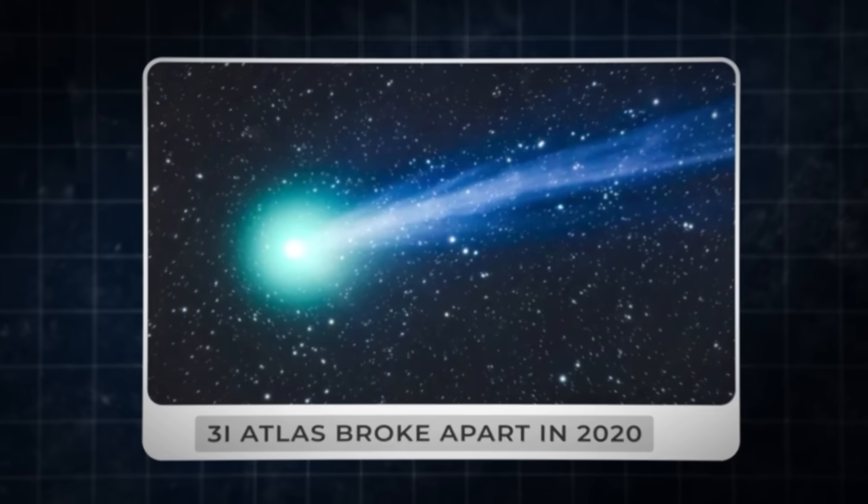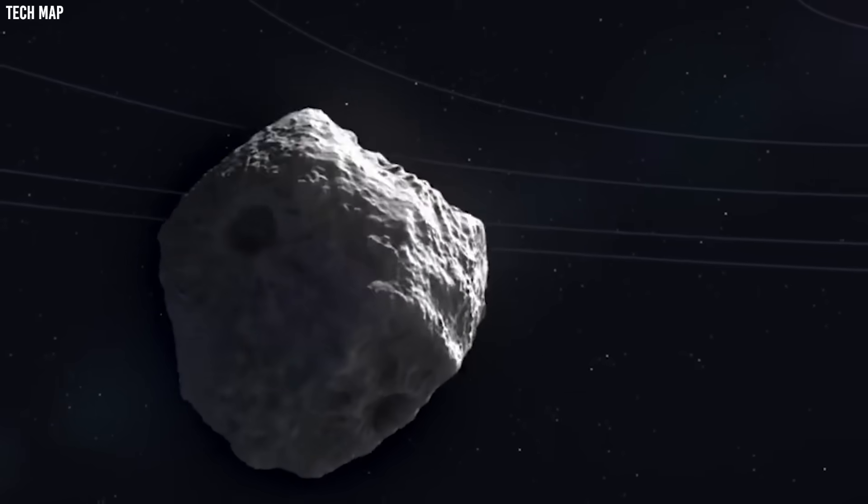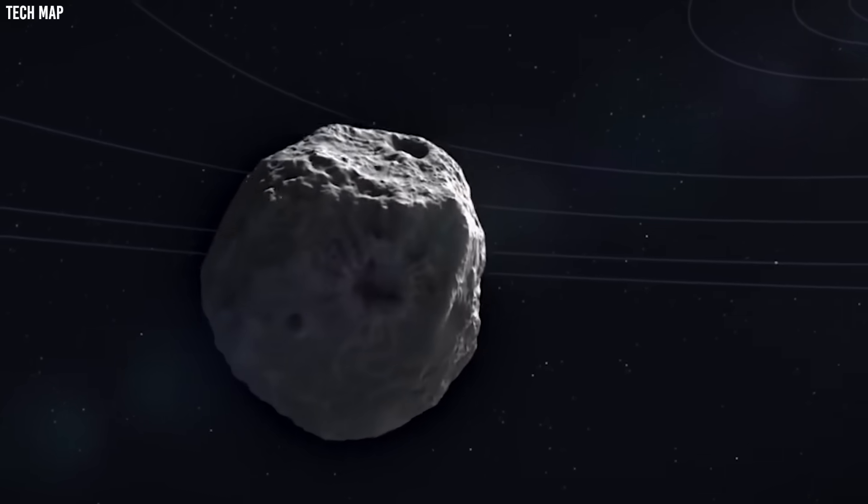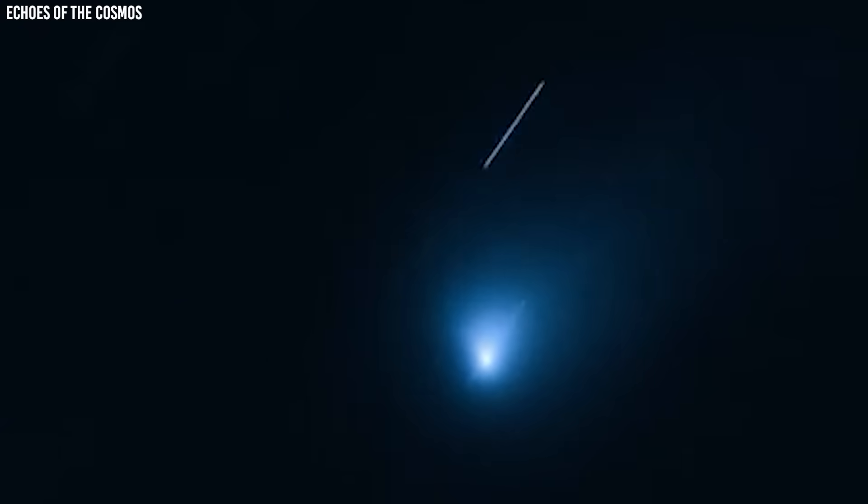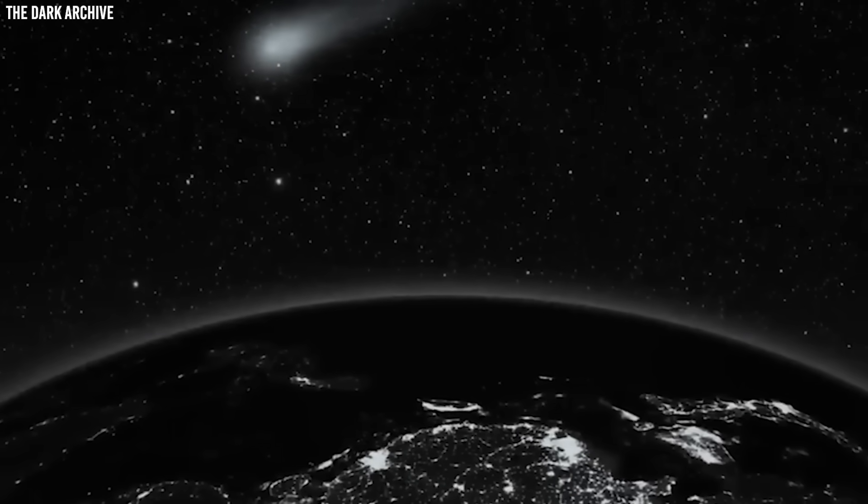Comet 3I Atlas broke apart in 2020, creating a spectacular but short-lived show. Comet 2I Borisov, which came from another star system entirely, held together better but still showed signs of stress during its visit in 2019.